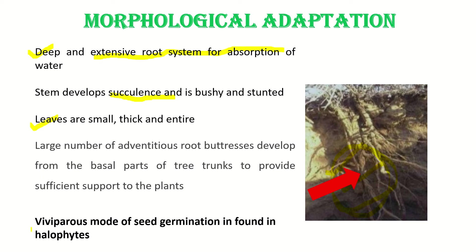Last, we come to viviparous germination. This is a very important point. Viviparous germination is that kind of germination where the seed starts growing when it is still attached to the mother plant. This feature is found in halophytes.